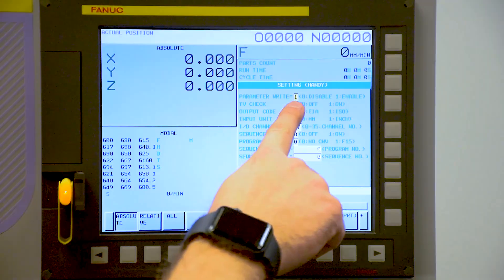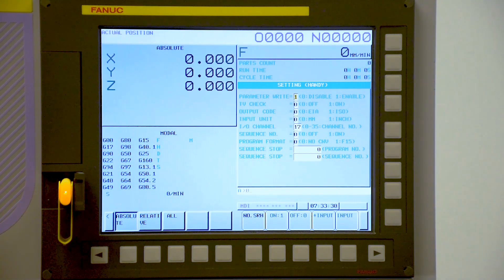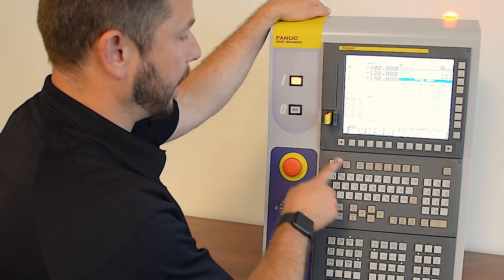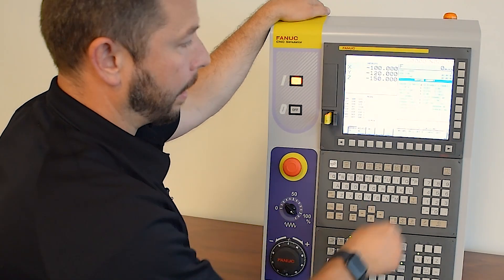Go back to our offset screen, our settings. Put a zero back in the parameter right enable. That locks the parameters up again. Press the reset to clear the alarm.